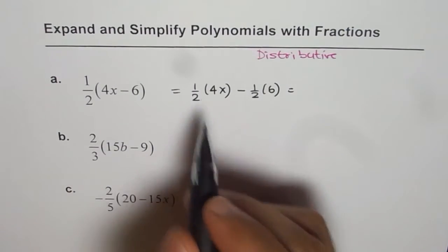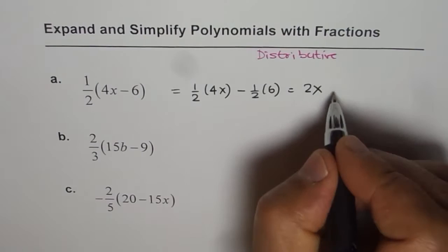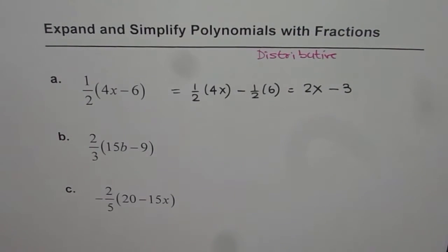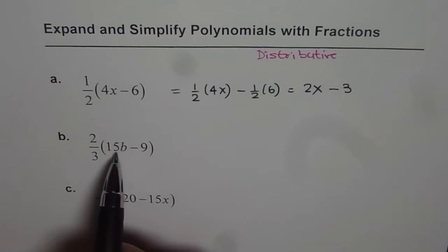Now half of 4 is 2 so we get 2x and half of 6 is 3. 2x minus 3 is our answer. The next one is 2 over 3 times 15b minus 9.